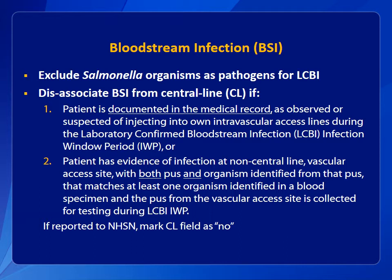The second exception is a patient who has a central line but who also has an infected non-central line vascular access site, or has an infected central line site which was not accessed during the hospitalization. In this case, there must be both an organism identified in a blood specimen and purulence from the access site which tests positive for at least one matching organism in the blood. The pus from the access site must be collected during the LCBI IWP. In both exceptions, if a facility reports the BSI to NHSN, the data field's central line should be marked no. If additional blood tests are positive for organisms after the BSI repeat infection time frame, additional documentation would be necessary to exclude the BSI as a central-line associated BSI on the same grounds.